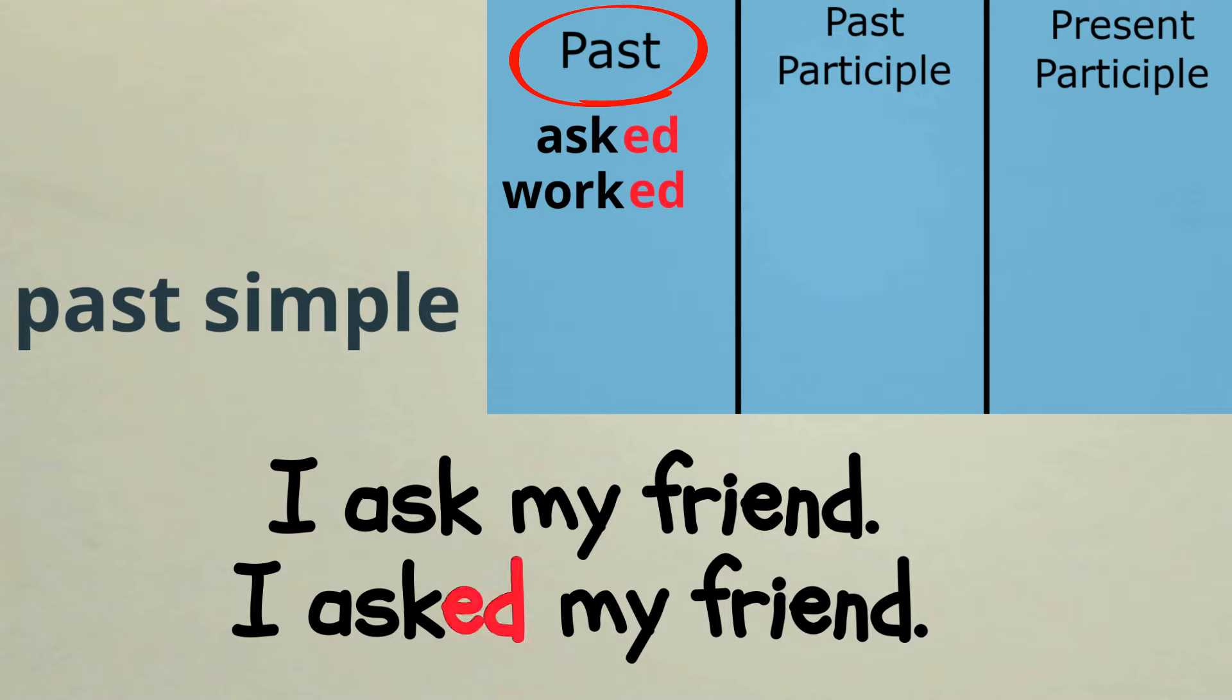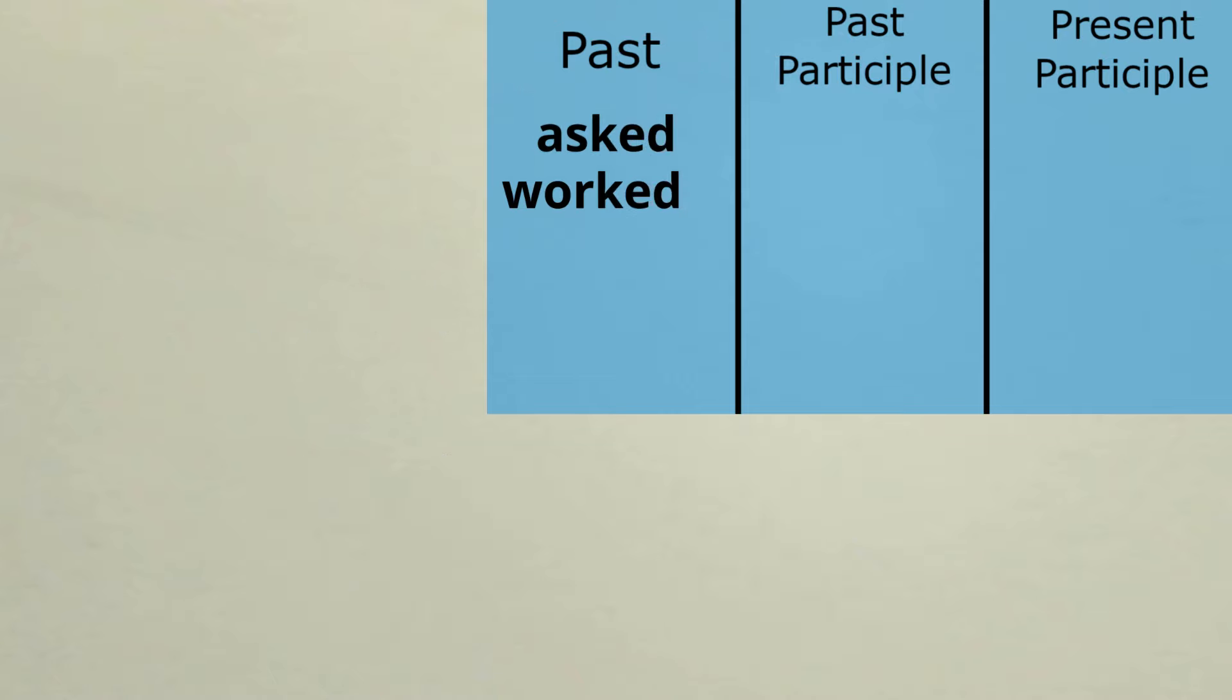With a single word, a past tense form of a verb, we can refer to an event that happened in the past. Let's now look at past participles. The past participle of the verb ask is asked. The past participle of the verb work is worked.